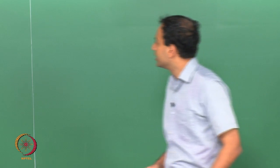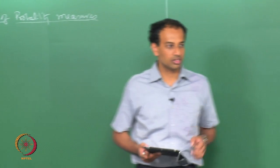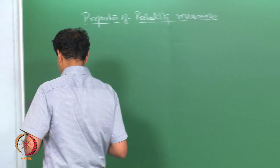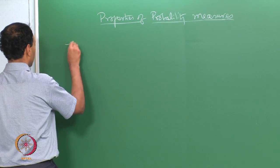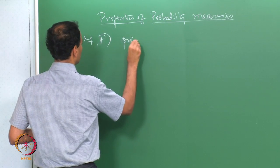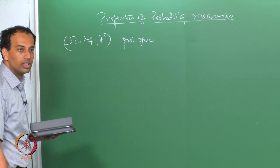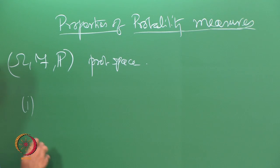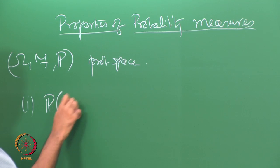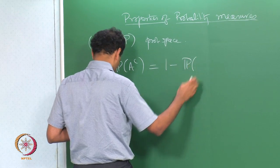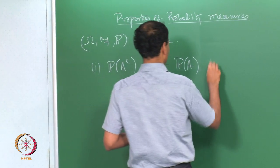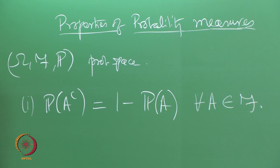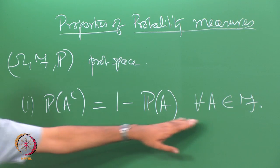Today we will derive, using these three axioms of probability, some fundamental properties of probability measures. The first property: for a probability space (Omega, F, P), all probability measures satisfy P(A complement) = 1 minus P(A).